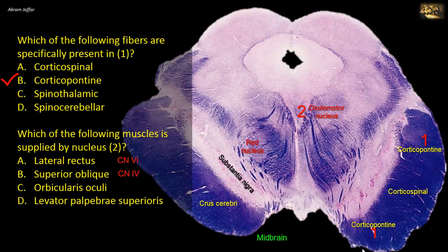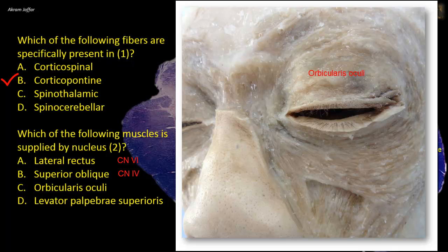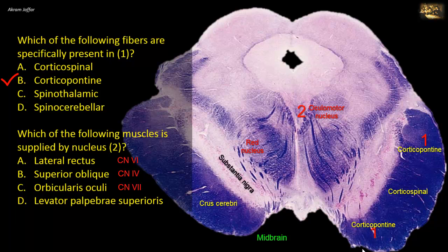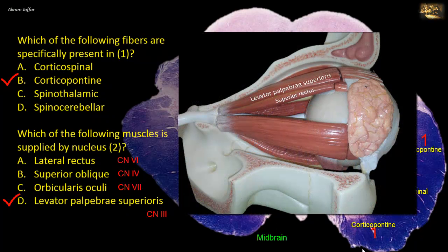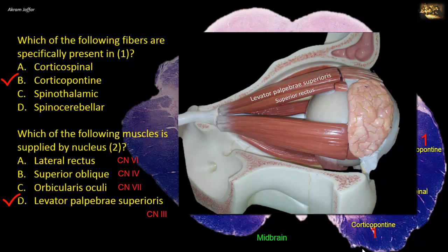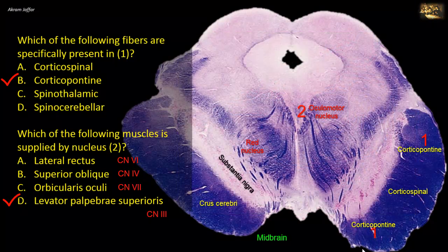Orbicularis oculi is a muscle of facial expression and is supplied by the facial nerve, whose nucleus is present in the caudal part of the pons, level with the abducent nucleus. So the correct answer is levator palpebrae superioris. This muscle is supplied by the oculomotor nerve and is a muscle of the upper eyelid — it does not act on the eyeball. This muscle also has a smooth muscle portion called Müller's muscle that receives sympathetic innervation from the superior cervical ganglion.